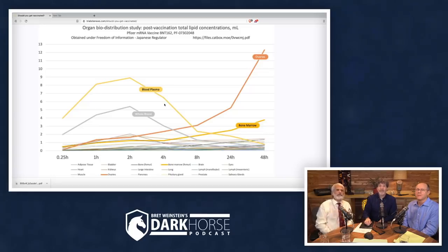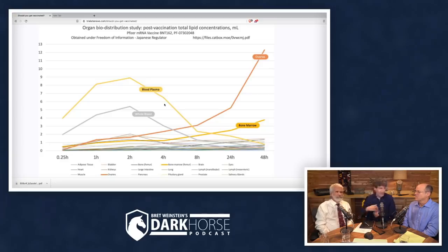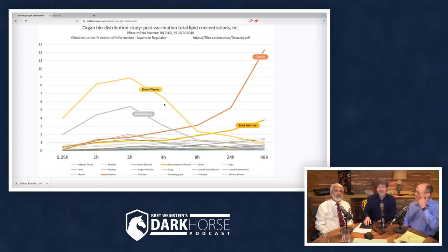All of these things decline as the drug basically diffuses through the body, which is not what you would hope — you'd want it to stay in the arm. Concentrations are dropping as it gets more evenly distributed. Then concentrations are rising conspicuously in two places as we close in on 48 hours. One of them is in the ovaries, where it goes sky high.